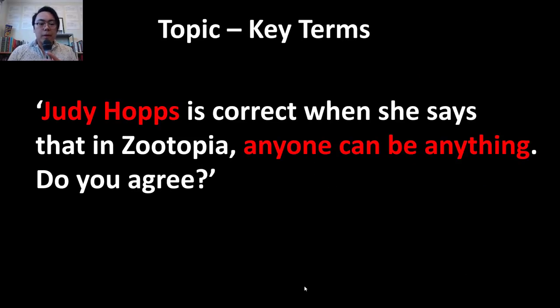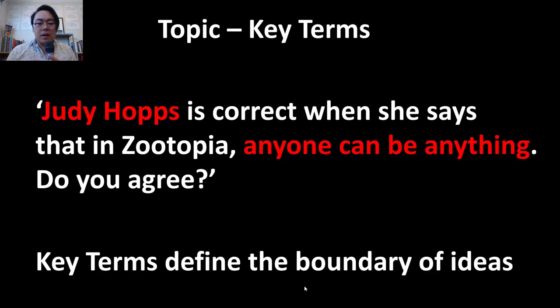So let's start with the topic. So in my school we're teaching the film Zootopia. This was the prompt that we gave them. It says this: Judy Hopps is correct when she says in Zootopia, anyone can be anything. Do you agree? So I'm going to run through a little bit of my thinking. So imagine you're in that classroom, you sit down, you're about to take on this assignment, and that's the topic they give you. What's running through my mind? The first thing that's running through my mind are the key terms.